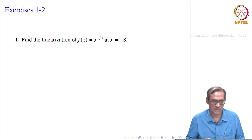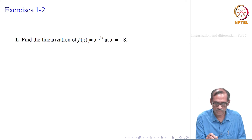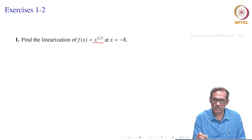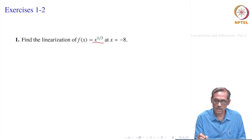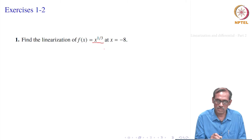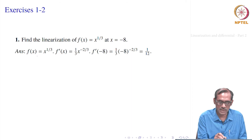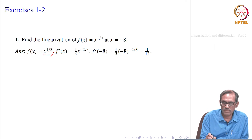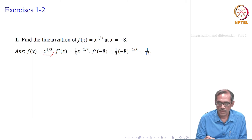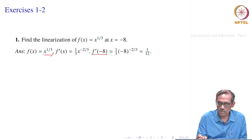It is a simpler way of looking at the chain rule using differentials. Let us take some problems. We want to find the linearization of the function x to the power 1/3 at the point x equal to minus 8. We differentiate: f of x equals x to the power 1/3, so f prime of x equals 1/3 times x to the power minus 2/3. Substituting, f prime of minus 8 equals 1/3 times minus 8 to the power minus 2/3, which gives minus 2 to the power minus 2, equal to 1/4, so f prime of minus 8 equals 1/12.